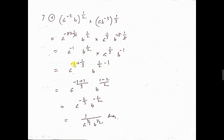For a: LCM is 3, so minus 3 plus 1 over 3 gives minus 2 by 3. For b: LCM is 2, so 1 minus 2 over 2 gives minus 1 by 2. If the power goes down to the denominator, it becomes positive. So the answer is a to the power 2 by 3 and b to the power 1 by 2 in the denominator.